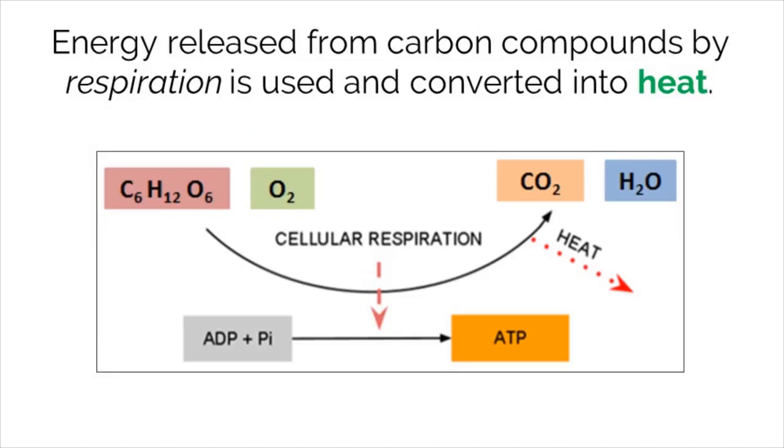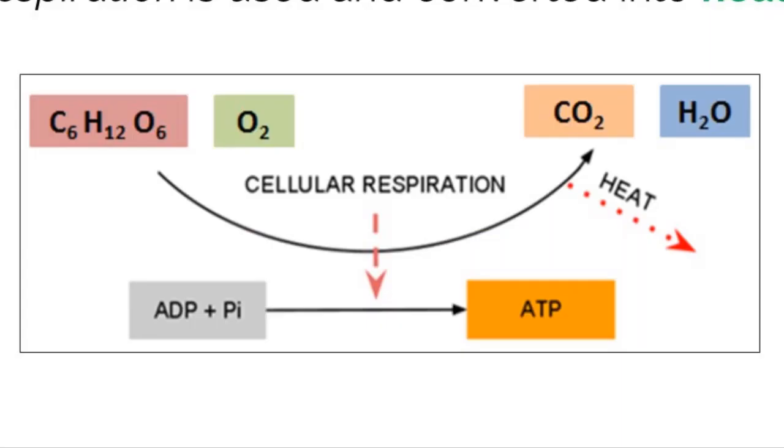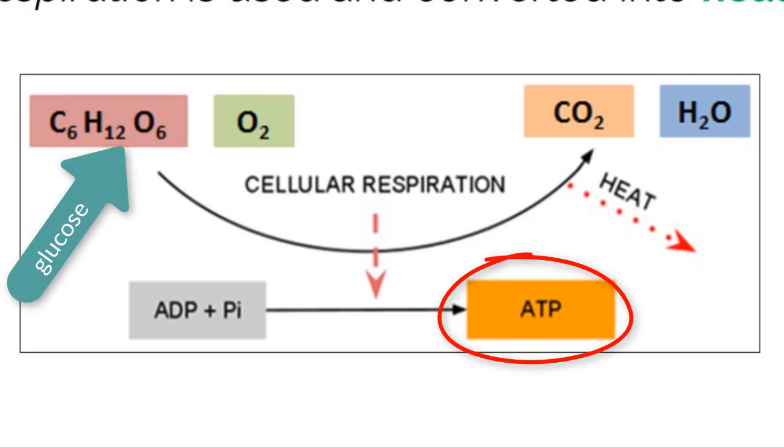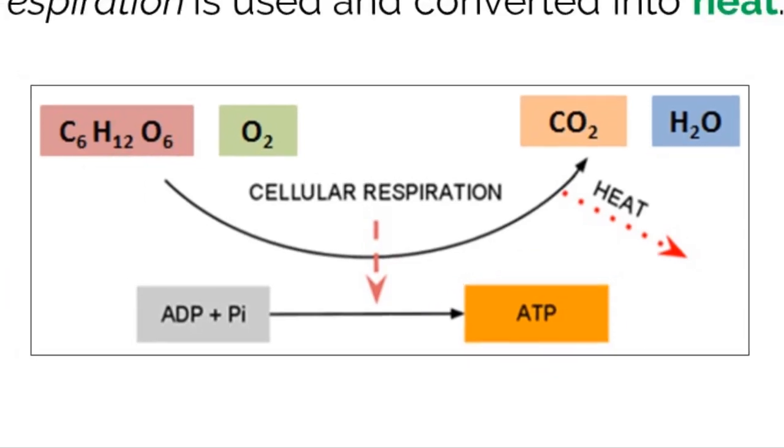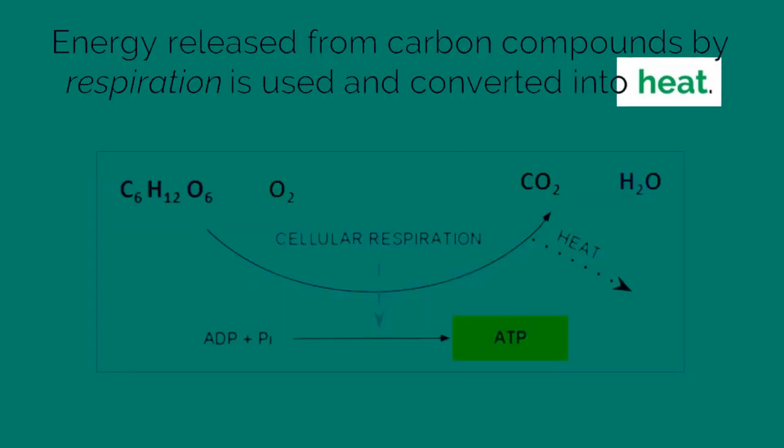Once energy is obtained by an organism through feeding, another process must happen in order to make that energy available in the form of ATP. This process is called cellular respiration. As seen in the picture, cellular respiration breaks down carbon compounds like glucose to form ATP. ATP is then used to support chemical reactions in the body for growth and homeostasis, both of which have a byproduct of thermal energy or heat.